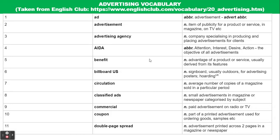Usually the benefits are derived from the features. Then billboard is a signboard, usually outdoors, for advertising posters and so on. UK talks about hoarding. Then circulation is a term that refers to the average number of copies of a magazine sold in a particular period. In newspaper and magazine houses, you have the circulation department. Then classified ads refer to small advertisements in a magazine or newspaper, categorized by subject — that's a class or category of advertisements.